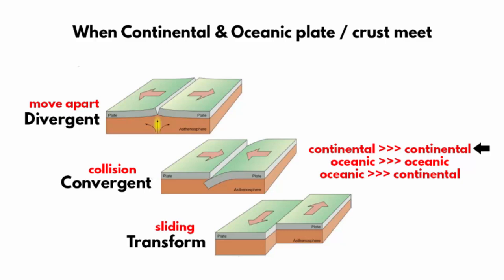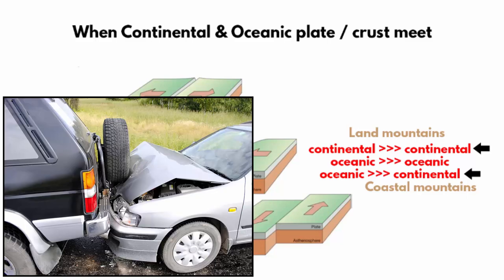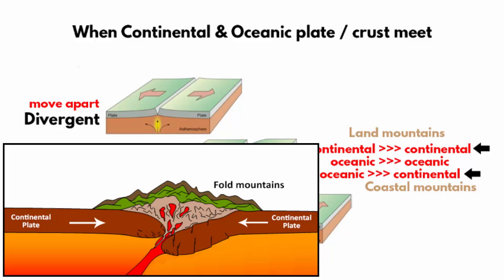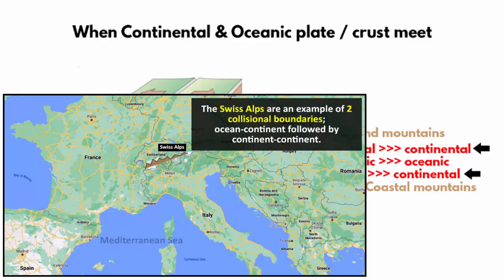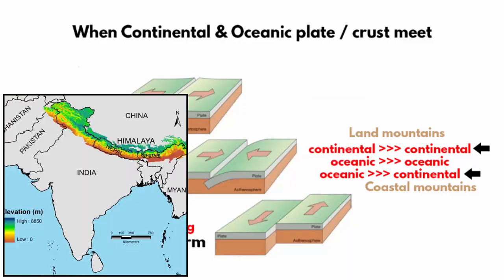Mountains are usually formed when two continental plates converge or collide. When they collide, they crash like cars — they typically bend, break, and crumble, creating folds and mountain ranges like the Andes, Swiss Alps, and the Himalayas.